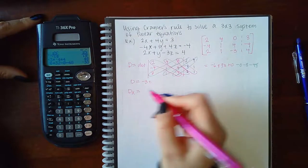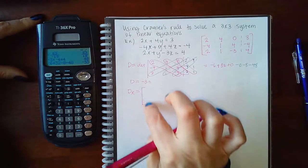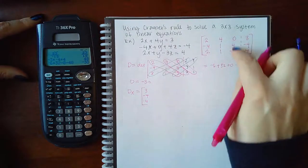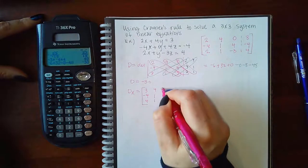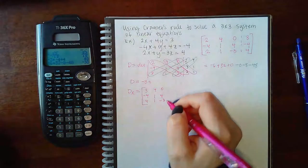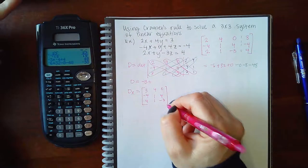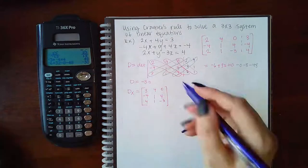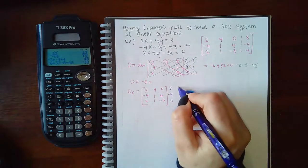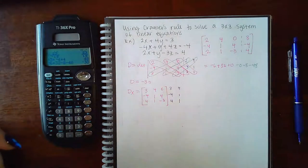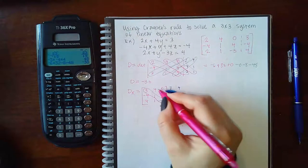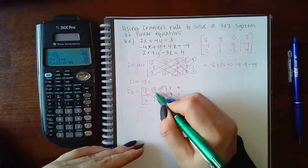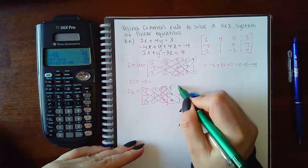Now we need to find DX. So we're going to replace the X column with the constants. But the Y column and the Z column are going to stay the same. Now I'm going to rewrite this again. Let's rewrite these next two columns here. And then let's start doing that method. So circle these, circle those, and circle these. Then going in the opposite direction, get all of those done.